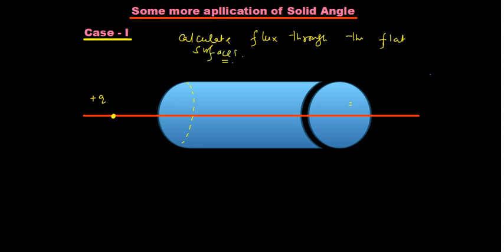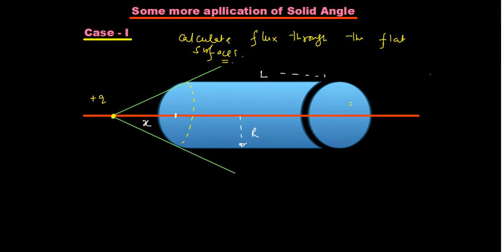We will try to do that — it is definitely easy for us now after knowing the concept. For that I will just draw a quick diagram. In this particular case, if it is mentioned that the distance from the charge to the nearer face is x, the radius is capital R, and the length of the cylinder is L. This angle I am taking to be alpha. We will calculate the solid angle first.